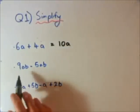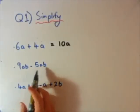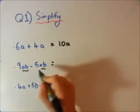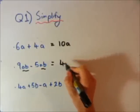Second one, 9ab minus 5ab. Now ab and ab, they're like terms. So 9 minus 5 is 4ab.